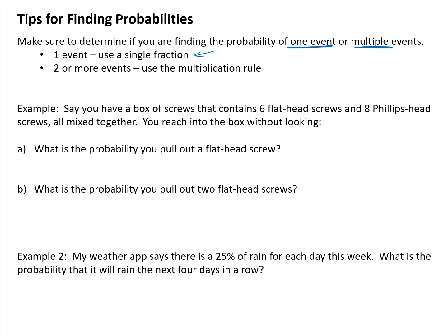So a single fraction if you're dealing with one event. If you have two or more events, we use the multiplication rule, and there you'll be multiplying a probability for each of the events that are happening, however many events you have. Let's look at a couple of examples to clarify that. First example, say you have a box of screws that contains six flathead screws and eight Phillips head screws, all mixed together. You reach into the box without looking.